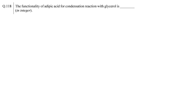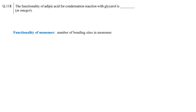The next question asks: calculate the functionality of adipic acid for condensation reaction with glycerol. First we need to understand what functionality means, and second what a condensation reaction is. Functionality of a molecule is defined by the number of functional groups present which can participate in a chemical reaction under the given conditions. Glycerol contains three hydroxyl groups and adipic acid contains two carboxylic groups.